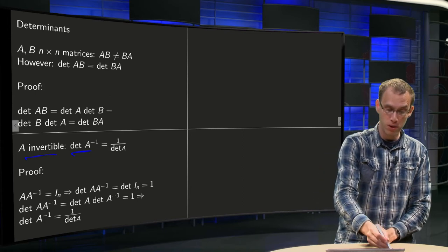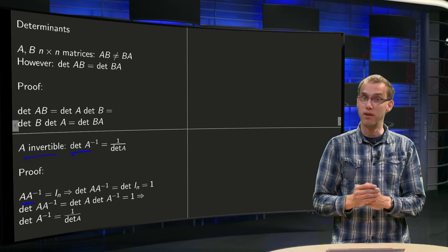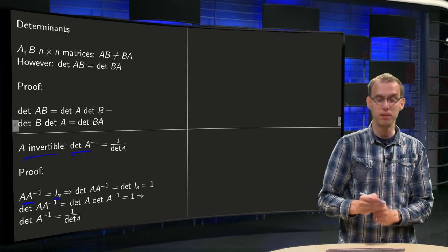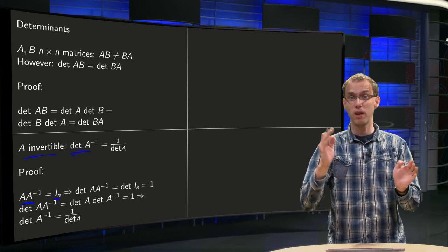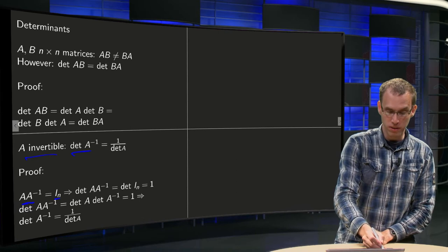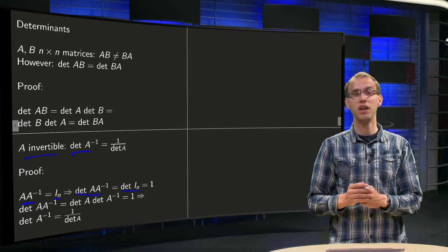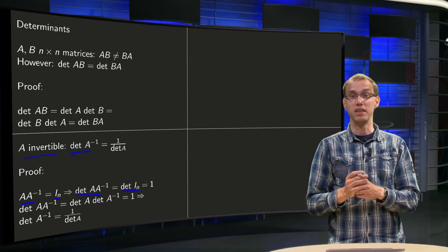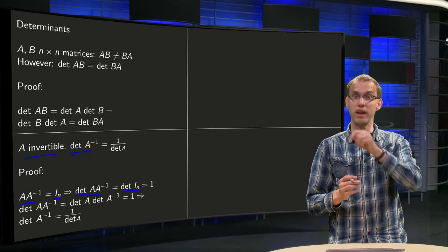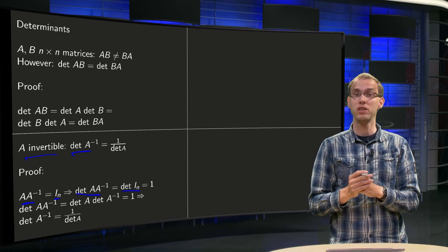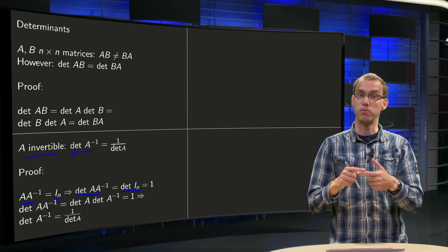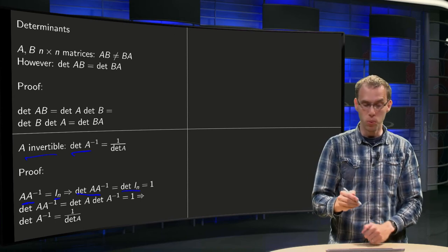A is invertible, so A times A inverse is the identity matrix. Then we can take the determinants on the left and right hand side, so the determinant of A times A inverse equals the determinant of the identity matrix. Well, the identity matrix is the matrix that is only ones on the diagonal and zeros otherwise. So the determinant is just 1 times 1 times 1 times 1 equals 1.